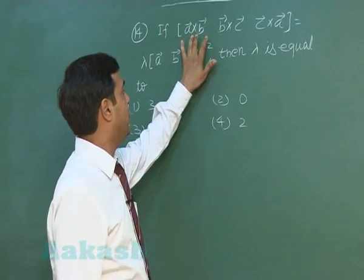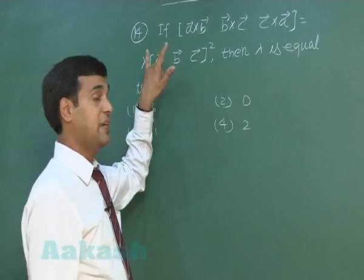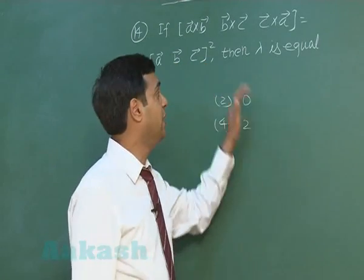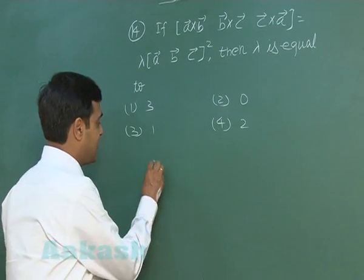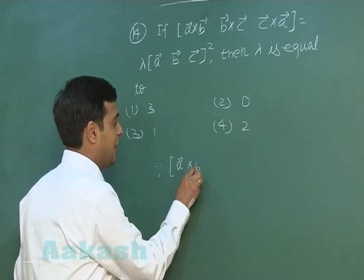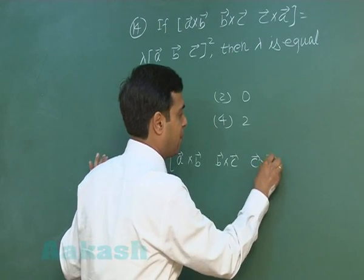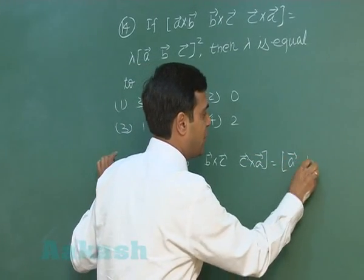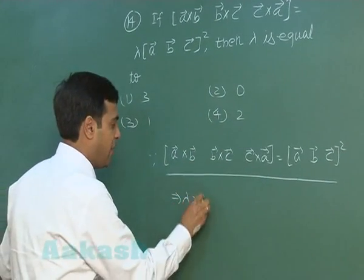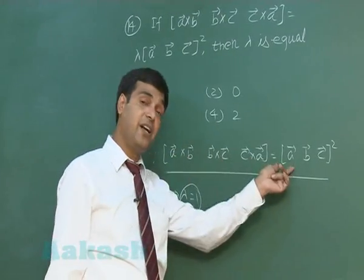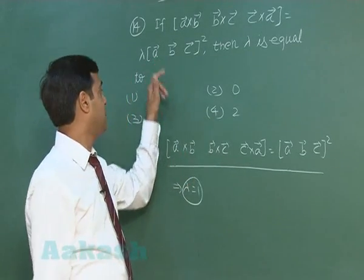If scalar triple product A cross B, B cross C, C cross A is equal to lambda times scalar triple product A, B, C whole square — this is one standard result. We know that scalar triple product A cross B, B cross C, C cross A is equal to scalar triple product A, B, C whole square. So we can clearly see lambda is simply 1. This result is obtained by applying expansion using scalar triple product. The answer is simply option 3.